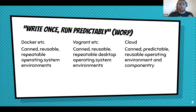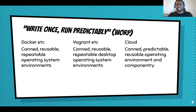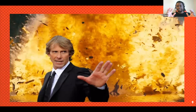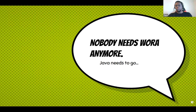In a world with Docker — a canned, reusable, repeatable OS environment — Vagrant, and the cloud, all providing predictable, reusable OS environments, I call this the 'write once, run predictably' or WORP world. Why do I need that layer of insulation from my programming platform? I don't. What I really need is to write my code once, bake it into a Docker container or Vagrant image, and be on my way.